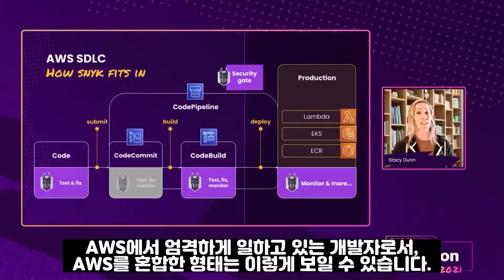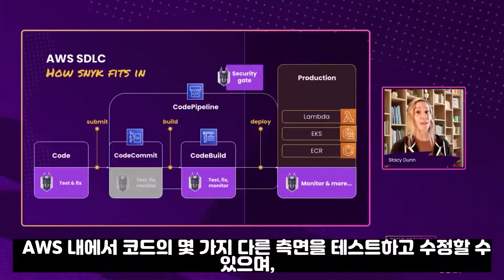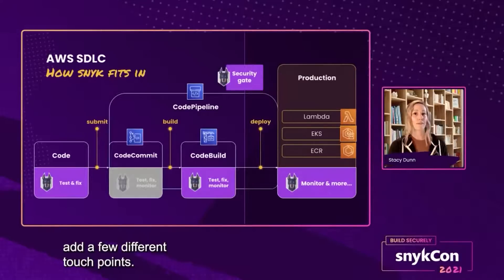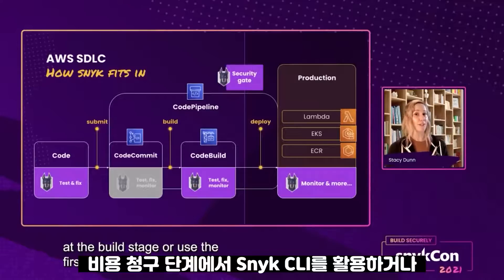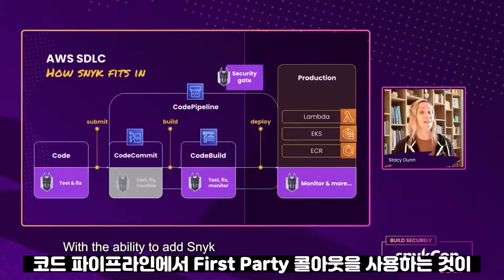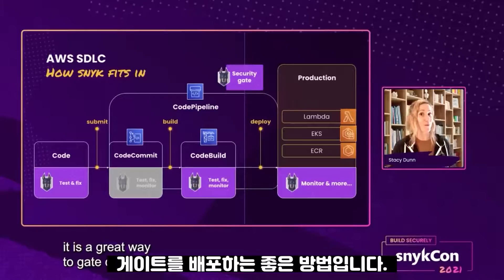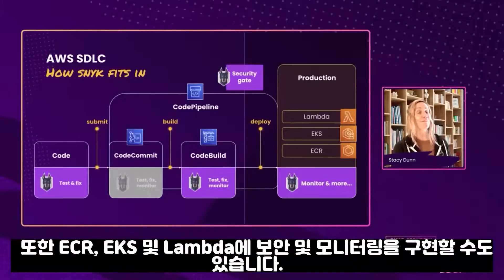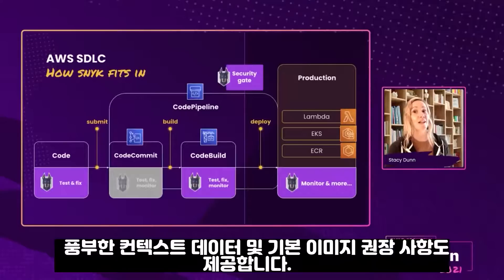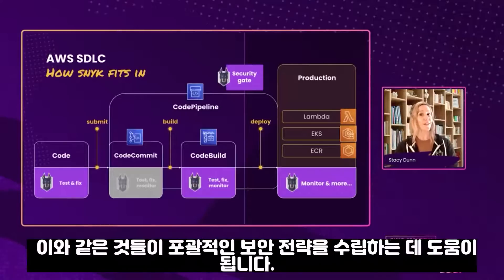As a developer working strictly in AWS, it might look something like this. Within AWS, we can test and fix a couple of different aspects of our code at a few different touch points. A great example would be to leverage Snyk CLI at the build stage or use the first-party callout in CodePipeline. With the ability to add Snyk directly into CodePipeline, it is a great way to gate deployments. On top of that, we can even implement security and monitoring into ECR, EKS, and Lambda. With our ability to scan ECR, not only do we provide prioritized vulnerability counts, but also rich contextual data and base image recommendations — helping get that whole comprehensive security strategy.